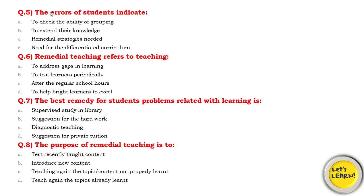Question number 5: What do student errors indicate? Options are: to check the ability of grouping and manage them; to extend or show their knowledge; remedial strategies needed; or the need for a differentiated curriculum. The question is asking where remedial strategies fit in the context of student errors.